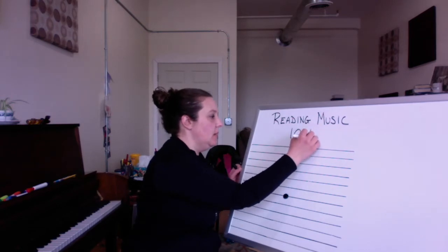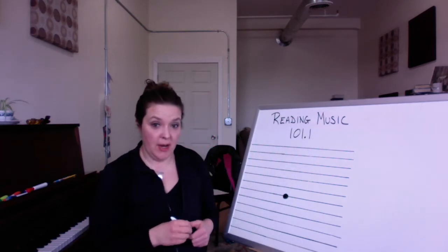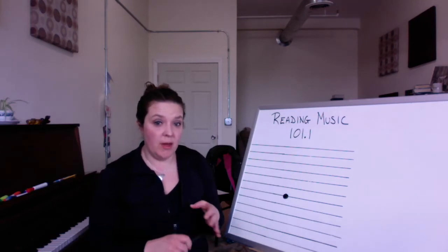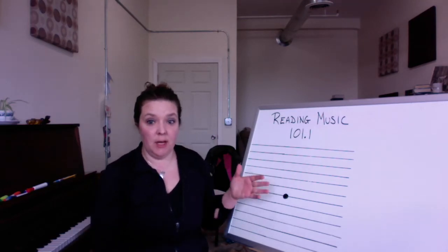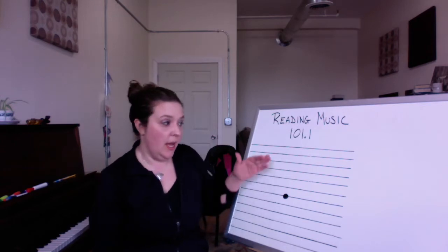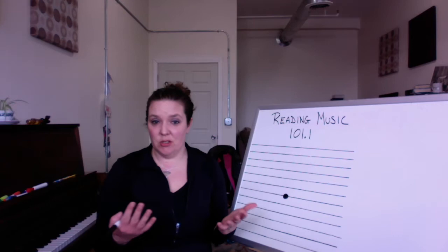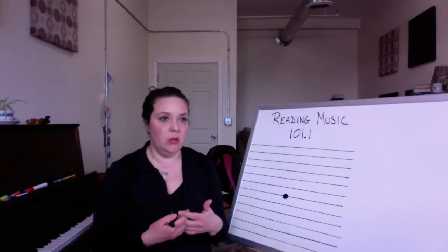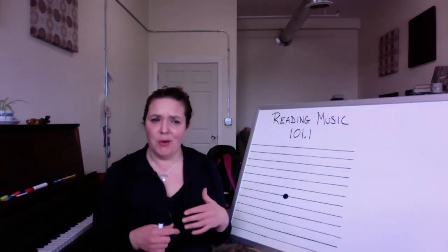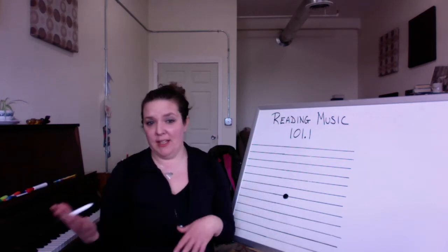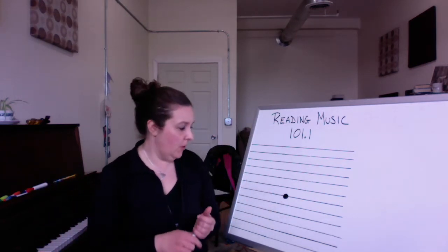So the last lesson, we talked about how the dots indicate the notes, and whether or not that dot is on a line or a space, and along a whole bunch of lines and spaces like this can tell us which note is which. We need a lot more information to figure out which note they're talking about on a keyboard, or a violin, or a bassoon, or whatever.